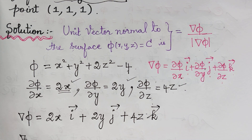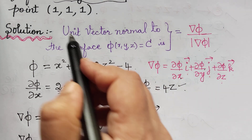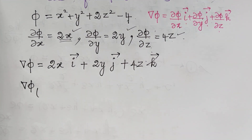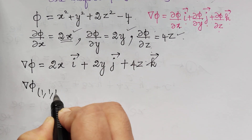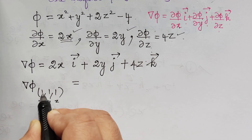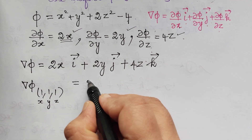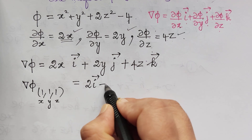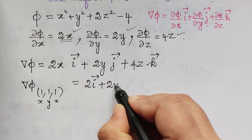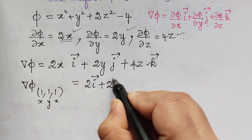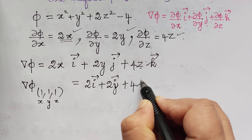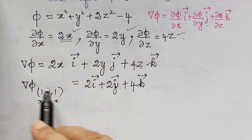Now we have to find ∇φ at the given point (1, 1, 1). Substituting x = 1, y = 1, z = 1, it becomes 2i + 2j + 4k. So ∇φ at (1, 1, 1) = 2i + 2j + 4k.